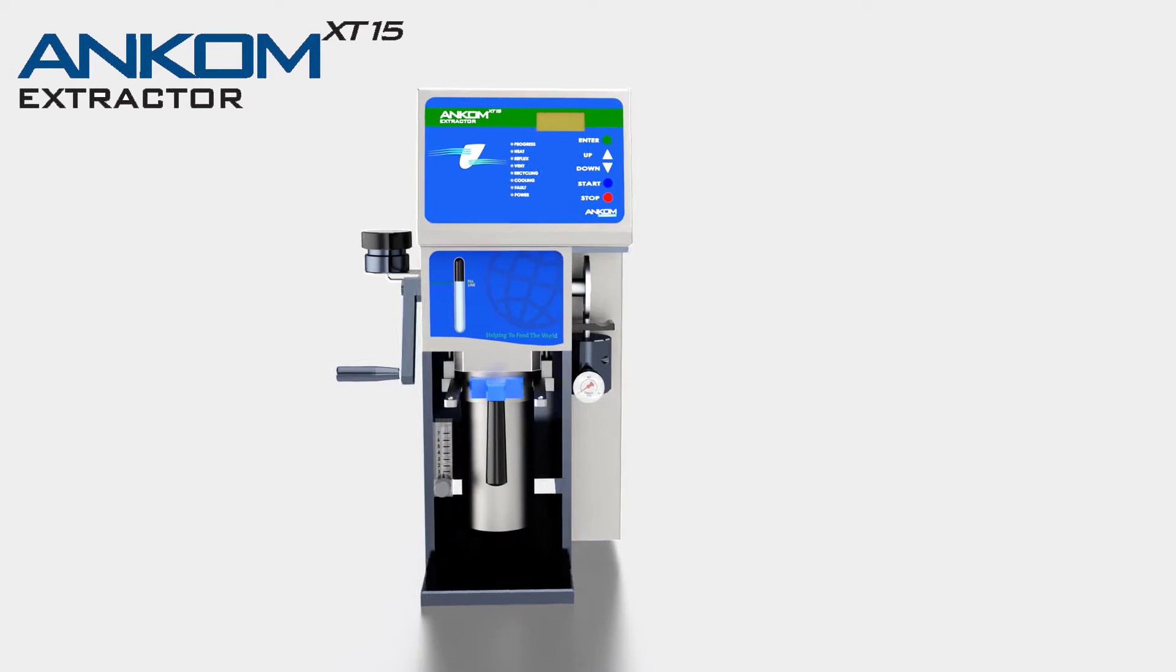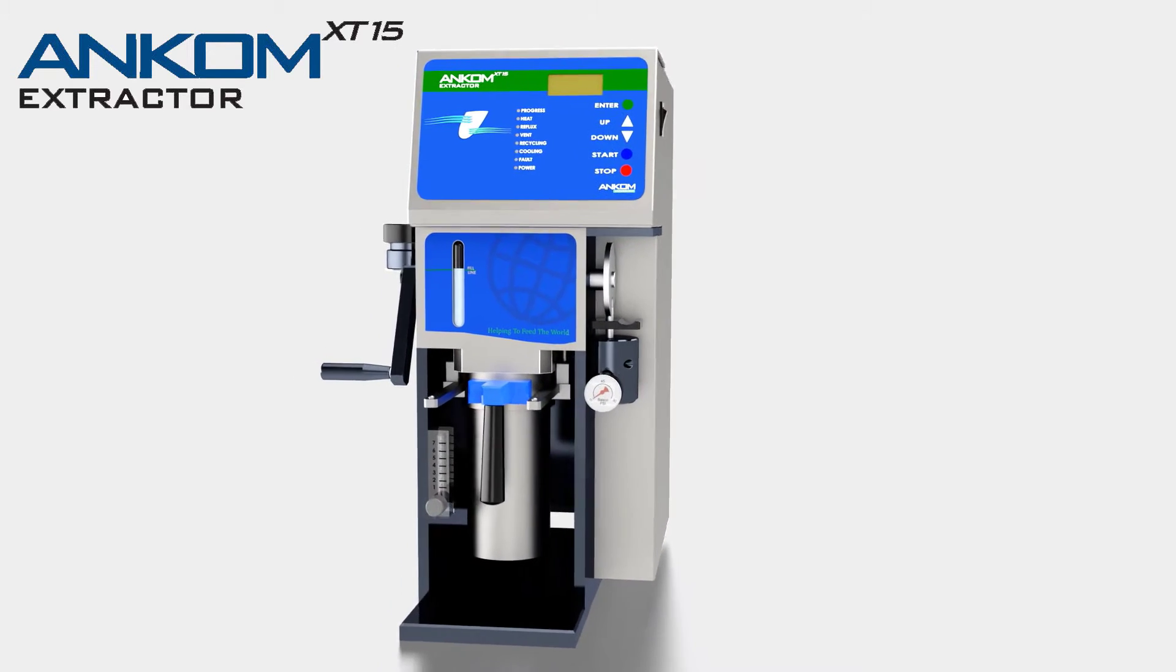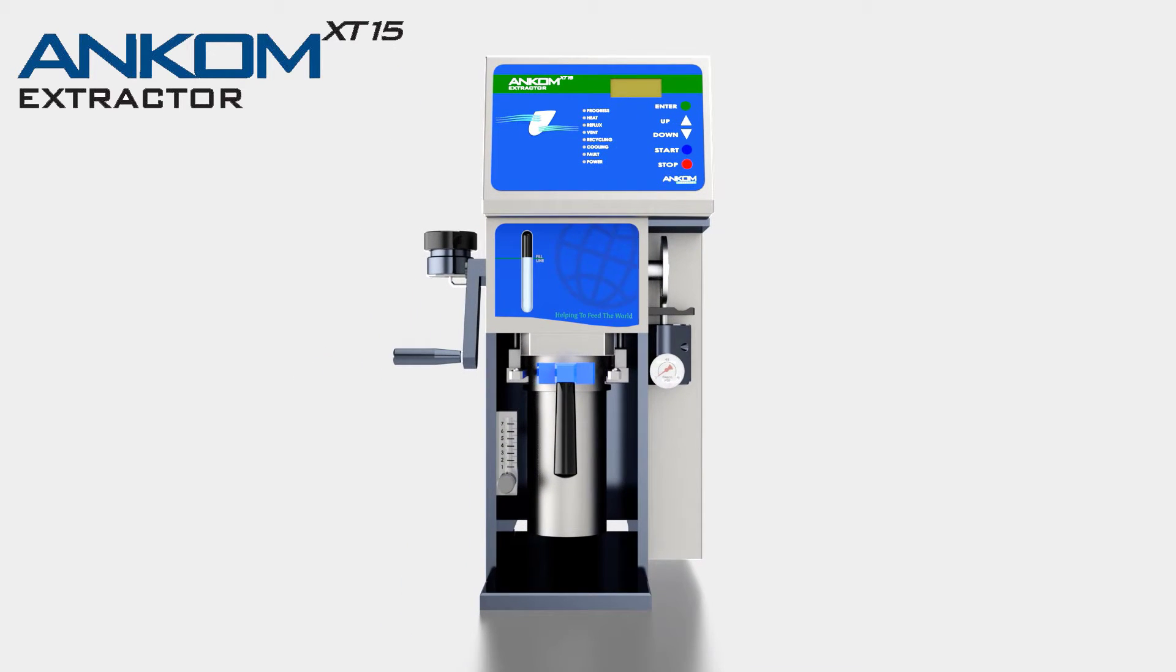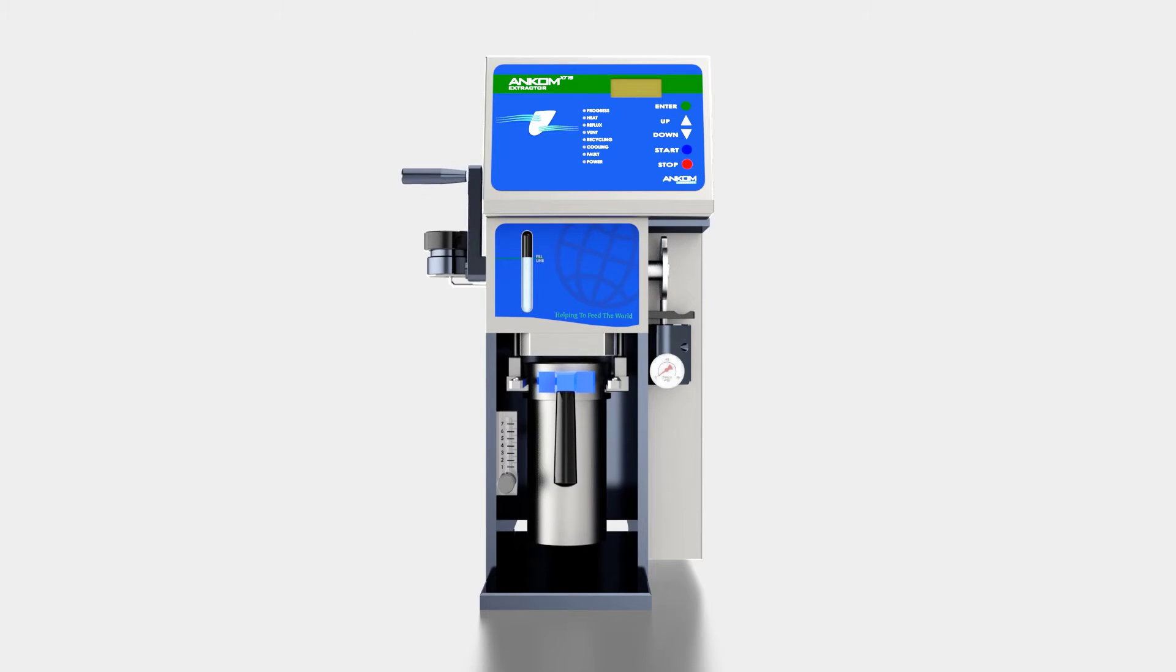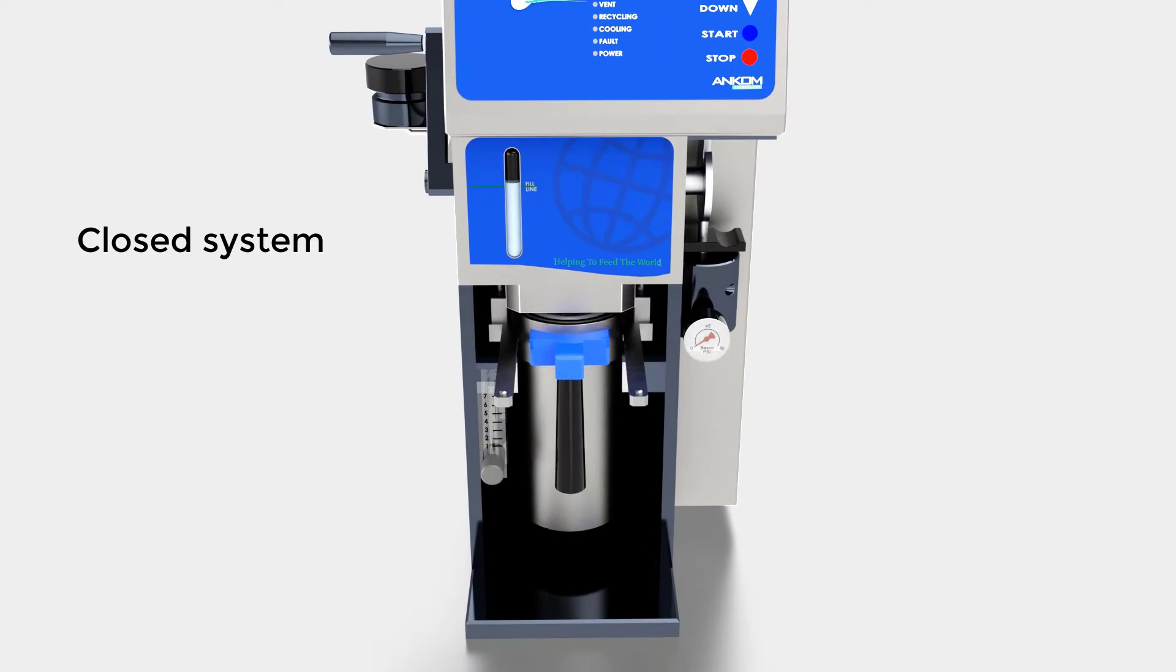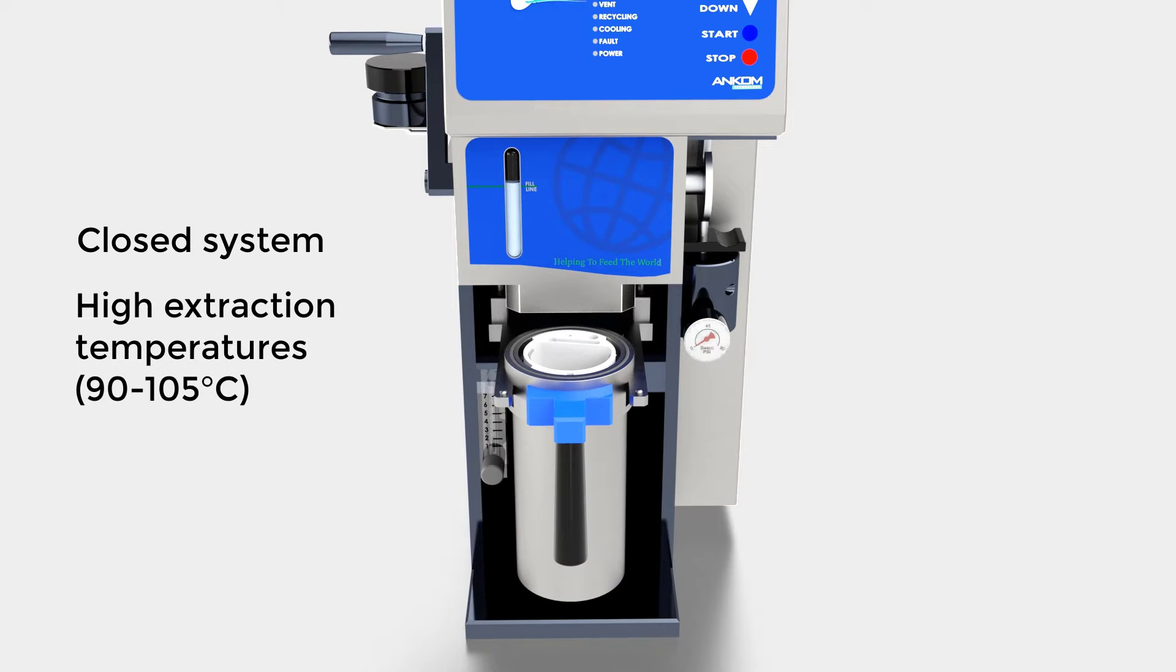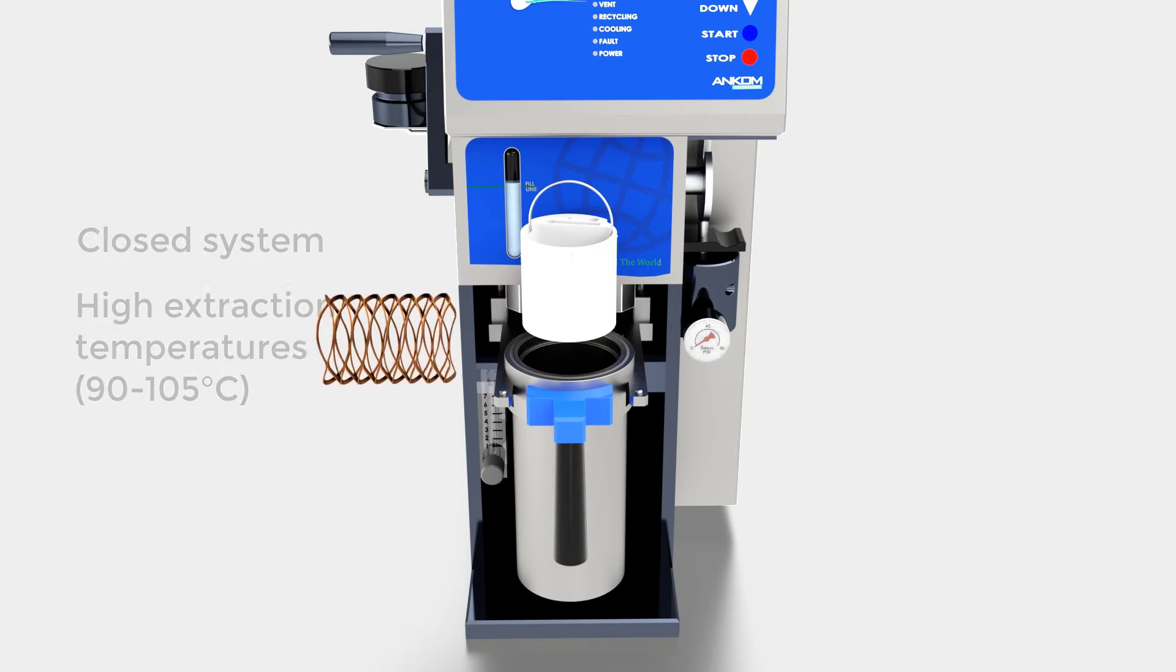The ANCOM XT15 extractor advances and simplifies the conventional Soxhlet operation. The XT15 automates the process in a closed system. 90 degrees Celsius extraction temperatures accelerate kinetics to greatly reduce extraction times.